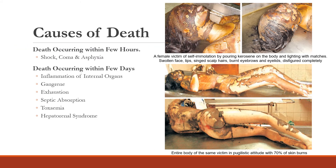Causes of death: deaths occurring within a few hours are due to shock, coma, and ataxia. Primary shock is neurogenic — fear, severe pain, and injury to vital organs leading to death within 24–48 hours. Secondary burns are vascular, due to loss of serum from the burnt area, causing depletion of blood volume and hypovolemic shock, leading to death in 24–48 hours.